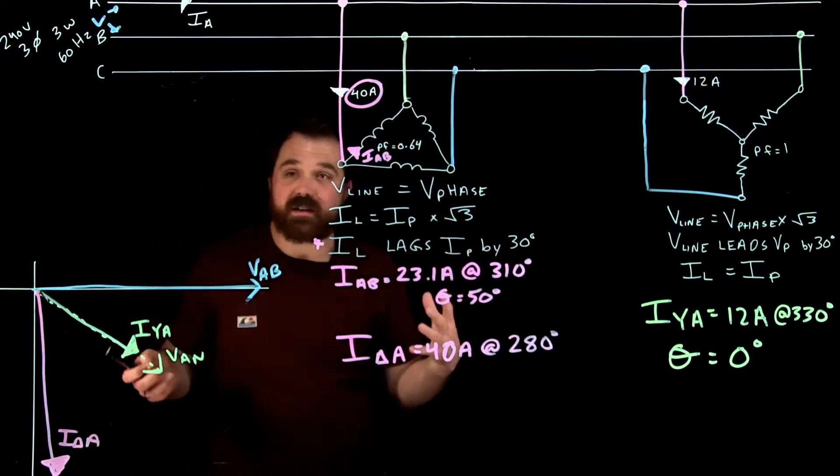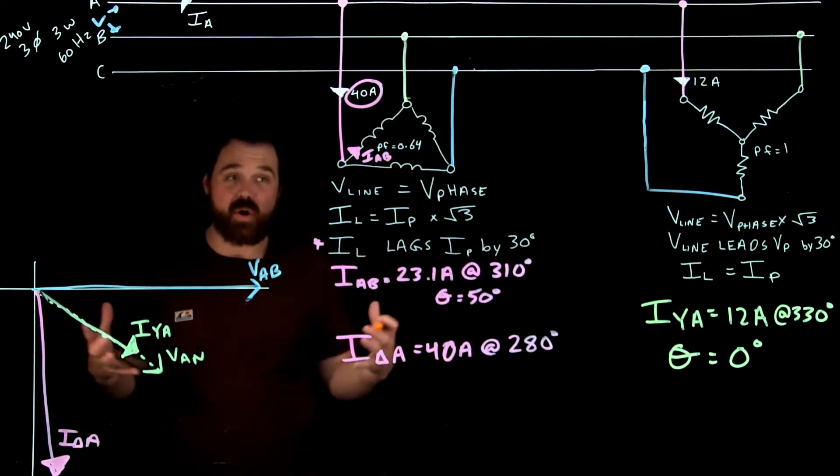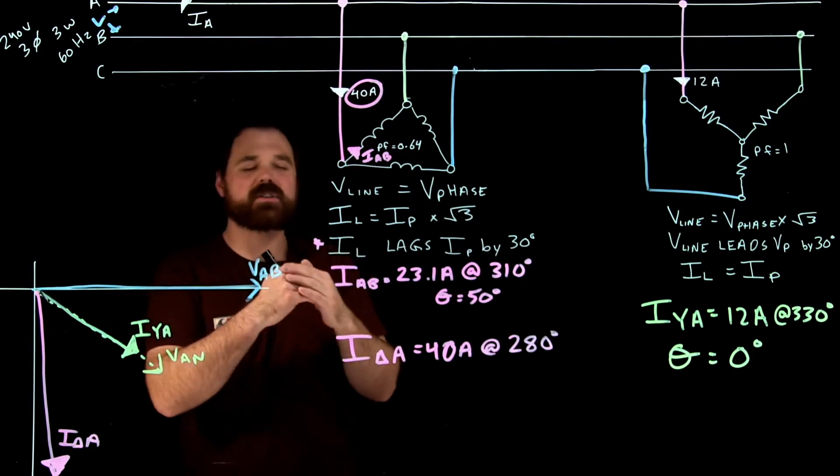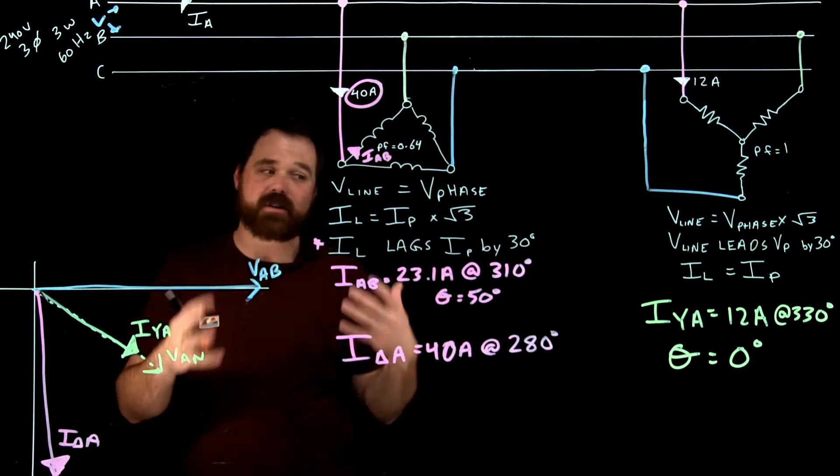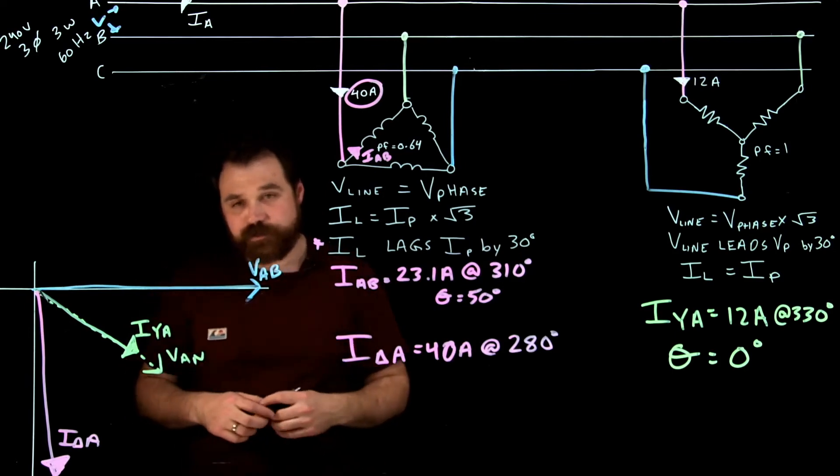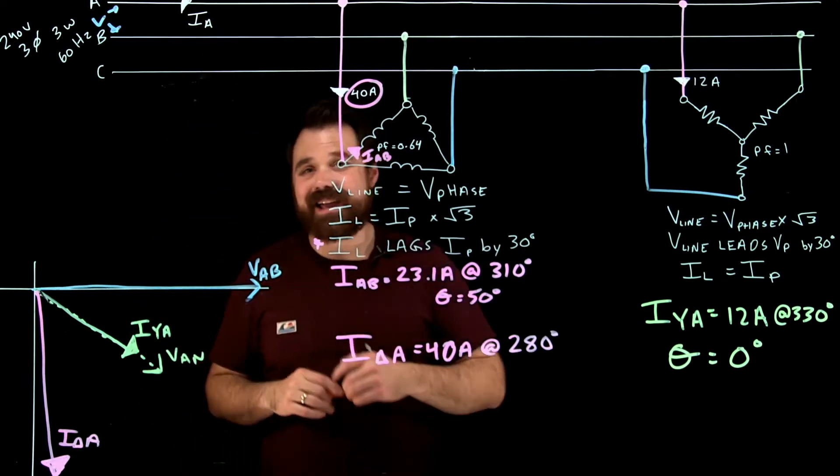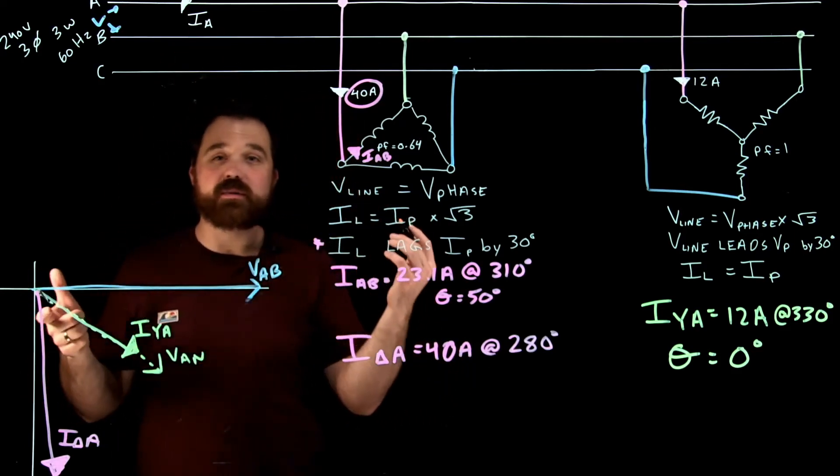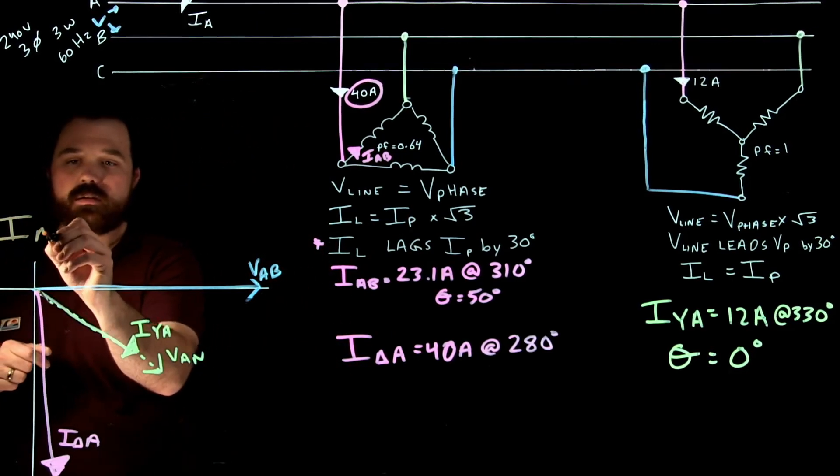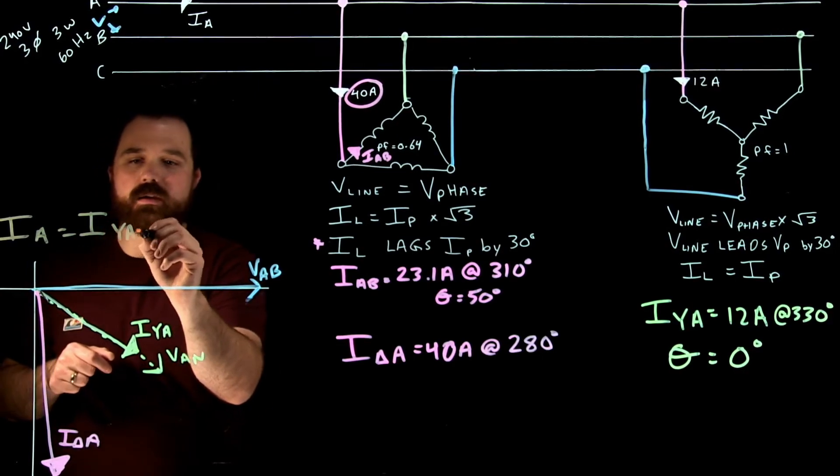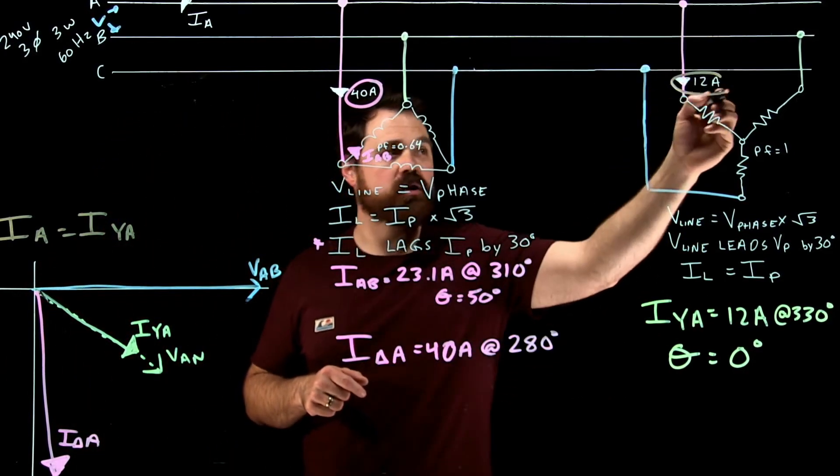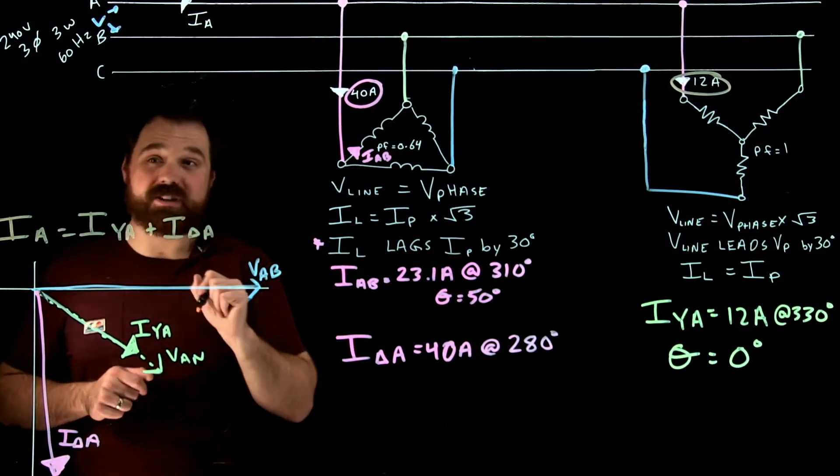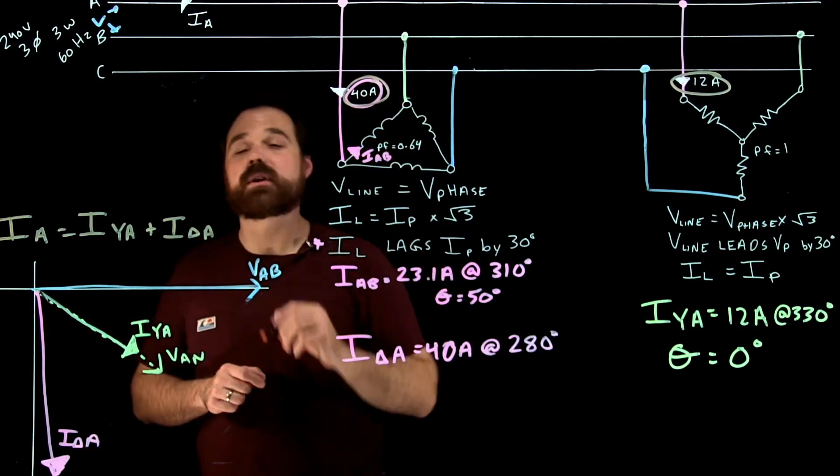Now what comes in at the very end is now I want to calculate that total current. So placing those is very important. Getting those - where's my phase voltage, where's my phase current, where's my line based off of that. So kind of follow both those processes. Now the trick, we want to get I A, our total current. So what we need to do is in order to get I A, we're going to do a little bit of math. We're going to go I A equals I Y A, our line current for over here, this 12 amps, plus I delta A based off the same reference, plus this 40 amps here.